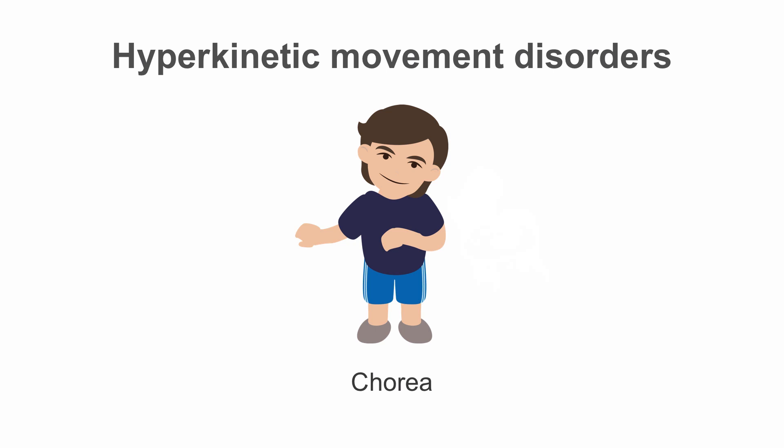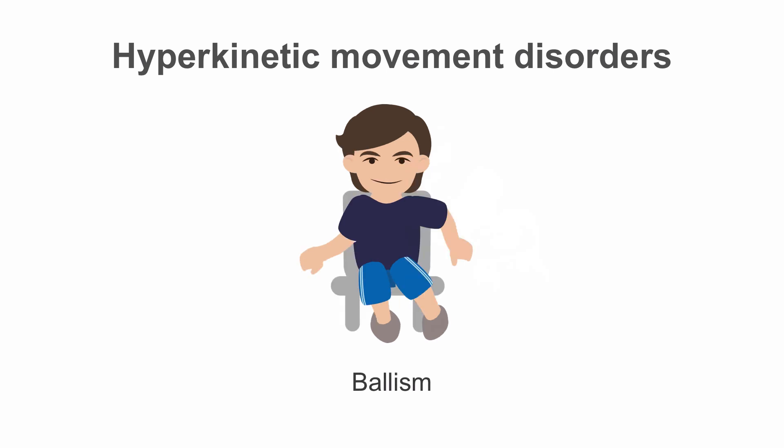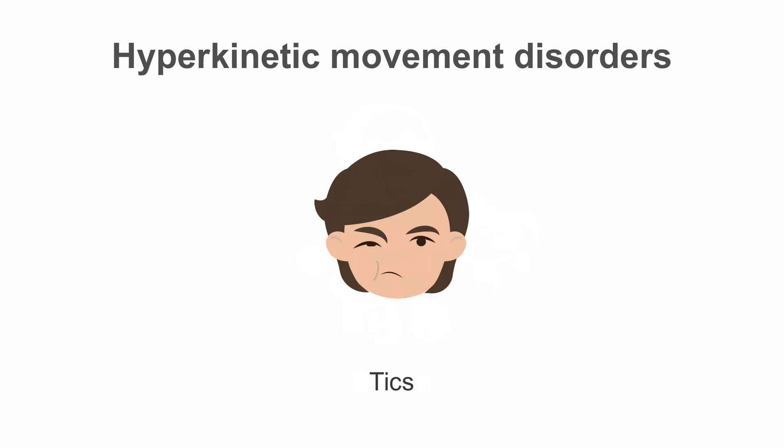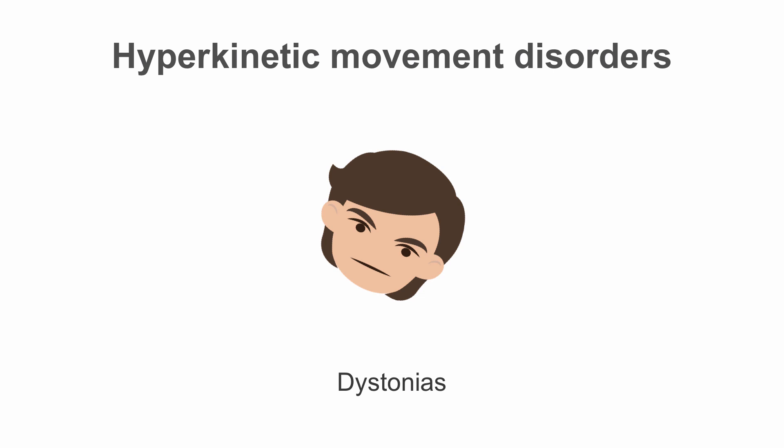Chorea is the classic symptom seen in patients with Huntington's disease. Ballism is a rare form of chorea characterized by involuntary jerking or flinging movements of the limbs, often affecting proximal muscles. Tics are involuntary, sudden, rapid, repetitive movements of any group of muscles, often involving the face, and may affect the voice with grunts or vocalizations — a common characteristic of Tourette's syndrome. Dystonias are involuntary sustained muscle contractures causing unnatural twisting or posturing.